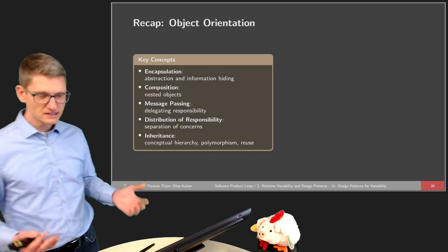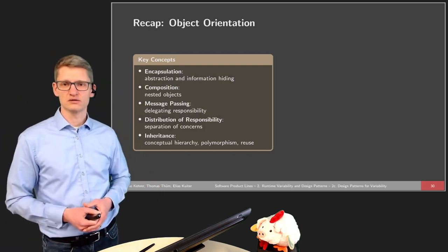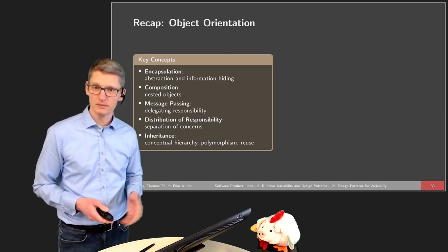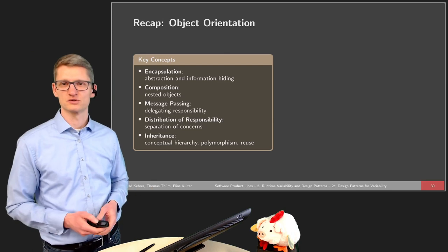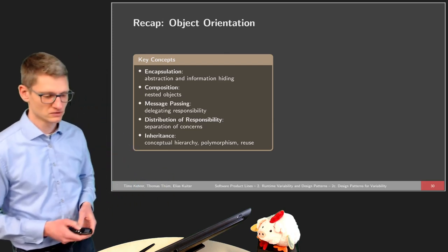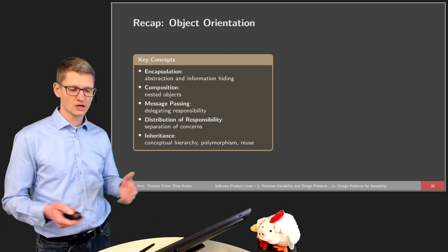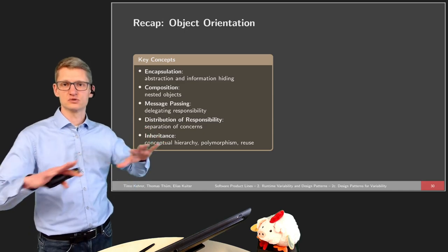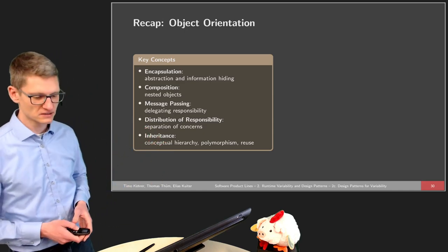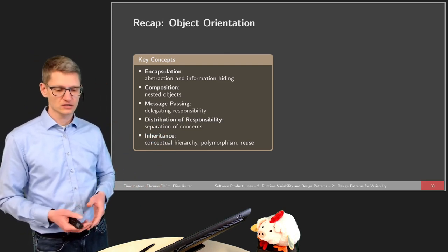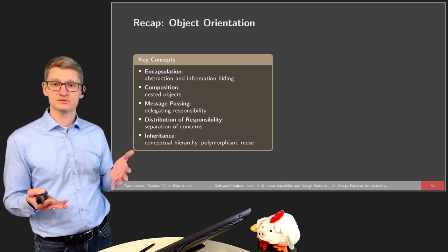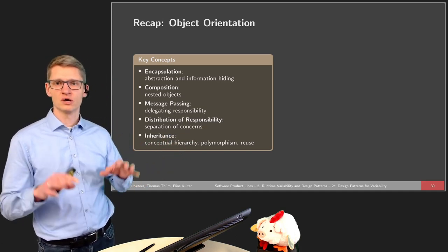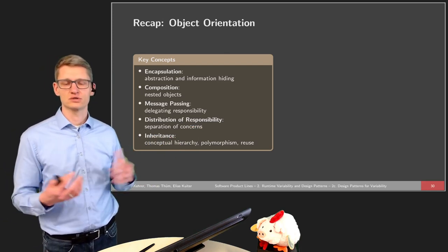Before diving into details with design patterns, we assume that all people hearing this course are already familiar with object orientation to a certain extent. You probably also have programming experience with object orientation. The idea is that object-oriented programming is a technique to help us split larger programs into smaller parts to develop them more easily. There are a couple of key concepts used. One is abstraction and information hiding, so encapsulation. We have certain abstractions of our domain, and an abstraction is, for instance, an object, but also a package or some other structure.